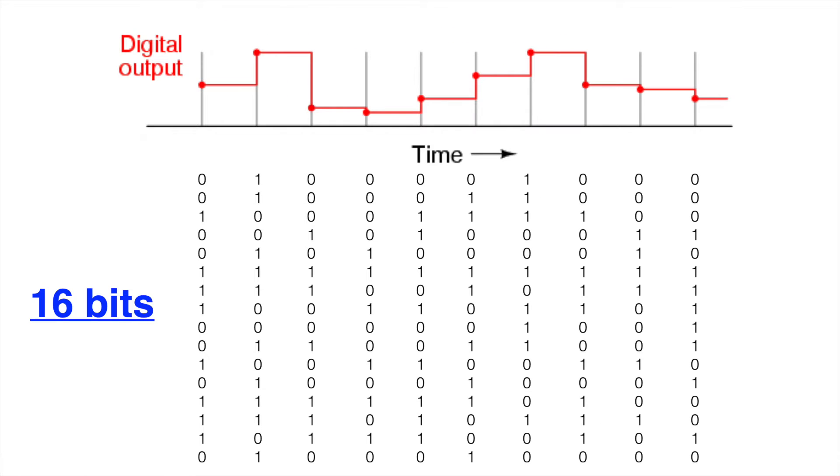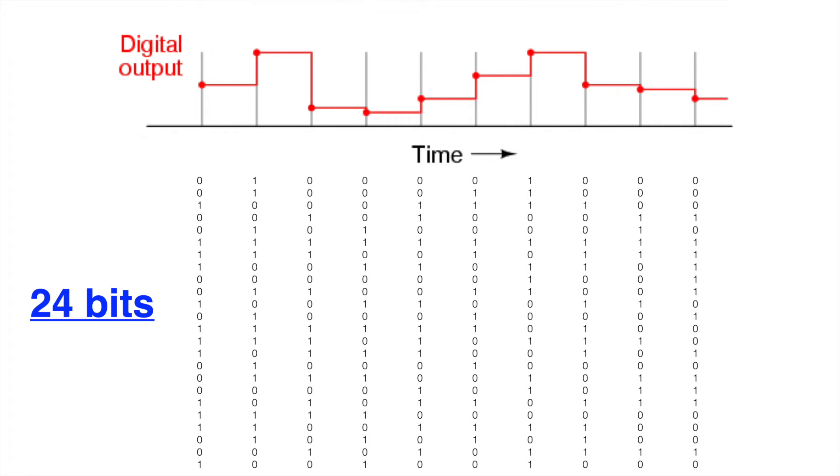So, as an illustration, here's a digitally sampled waveform. Samples have been taken at equally spaced intervals at the sample rate, and we're using 16 bits to represent each sample. 16 ones and zeros. Here, we have 24 bits. 24 ones and zeros representing those different amplitudes.